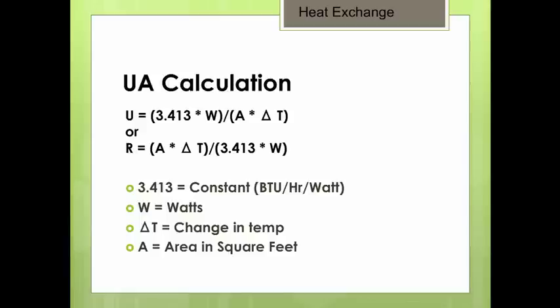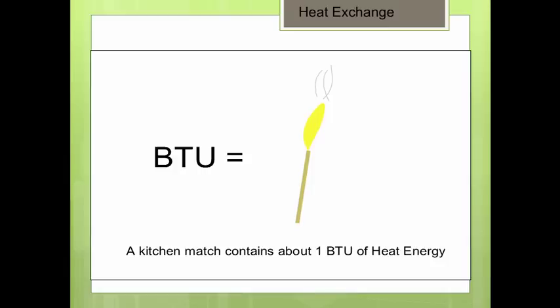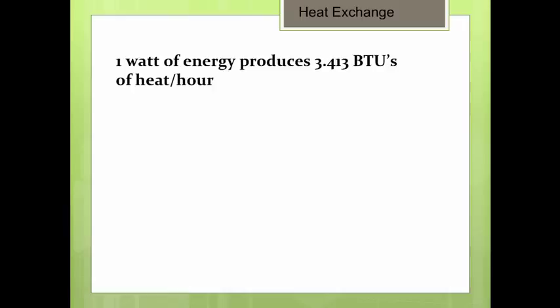First, BTUs per hour. Now we know that one BTU is about the same amount of heat that a wooden kitchen match produces when it's burned. And we know that one watt of energy produces 3.413 BTUs of heat per hour. So if we know the wattage of our heat source, we can calculate the number of BTUs being produced.